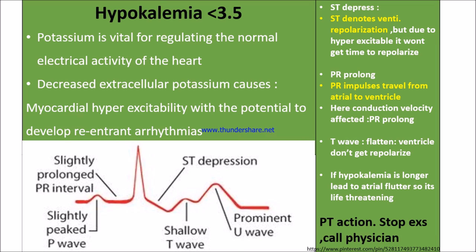Re-entrant arrhythmia is arrhythmia caused by depolarization of the SA node circling back to re-depolarize the SA node rather than traveling to the AV node or bundle of His. The first ECG change with hypokalemia is ST depression — the ST segment denotes ventricular repolarization, but due to hyperexcitability, there is no time for repolarization, resulting in ST depression.